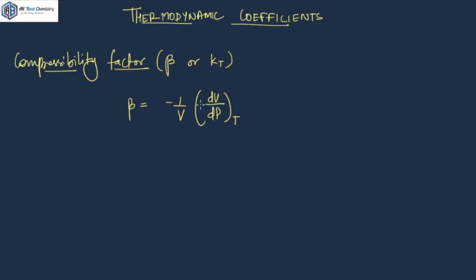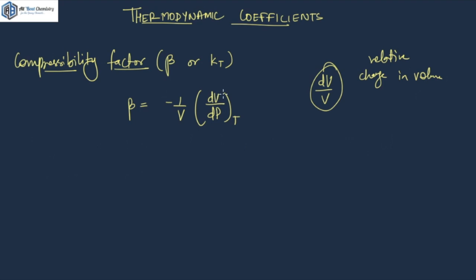That's why the change in volume will be negative, and that's why the negative sign tells you that the substance is actually getting compressed. As the name suggests, it's a compressibility factor. So dV upon V is going to tell you the change in volume — it's the relative change in volume with respect to the change in pressure, dP, at a constant temperature. That is what you get as a compressibility factor — that's the standard formula.